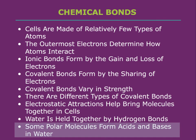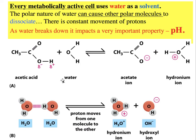Under physiological conditions, water molecules and many other polar molecules within cells have the potential to break down. For example, acetic acid has a hydroxyl group on its end. Under appropriate conditions, the hydrogen is removed from the oxygen, resulting in its association with water molecules to form a hydroxyl ion. This can change the pH.